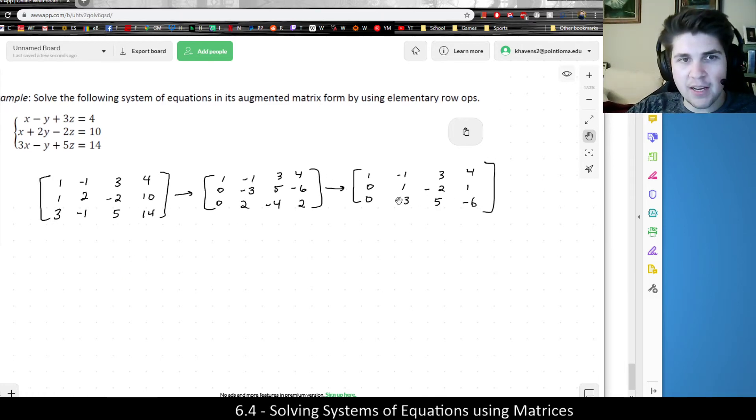Now, my goal is to get a zero down here. So I want to take three times row two and add it to row three. So that's what I'm going to do next. And I'm going to keep the first two rows the same, because those are progressing the way that I want them to. And then three times one is three, plus negative three is zero. Three times negative two is negative six, plus five is negative one. And three times one is three, plus negative six is negative three.